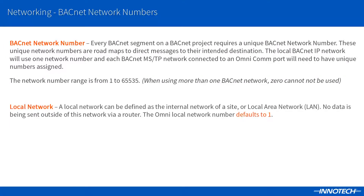A local network is the internal and local side of the local area network. No data is being transmitted outside of this network and it's kept local. The default network number for the local network is 1.